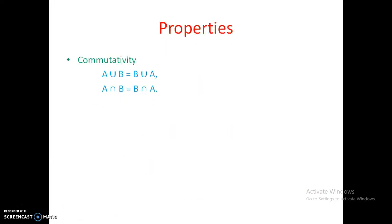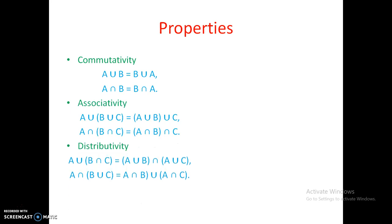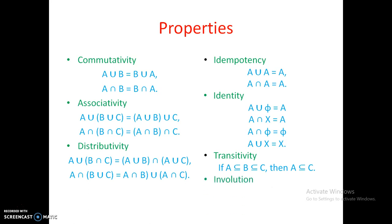Coming to properties — almost all properties hold good for both classical sets and fuzzy sets. These include commutativity, associativity, distributivity, idempotency, identity, transitivity, and involution. A double-bar is equal to A — this also holds good in fuzzy sets.